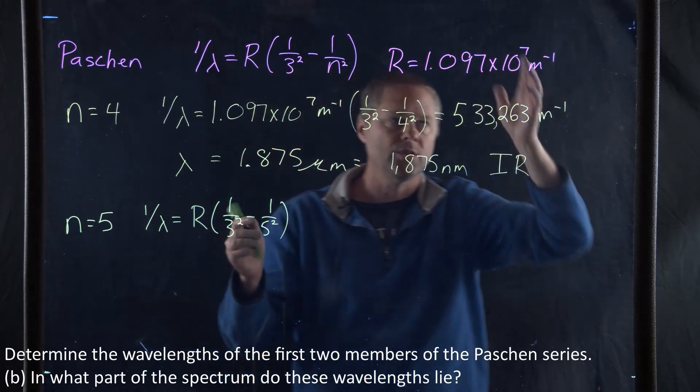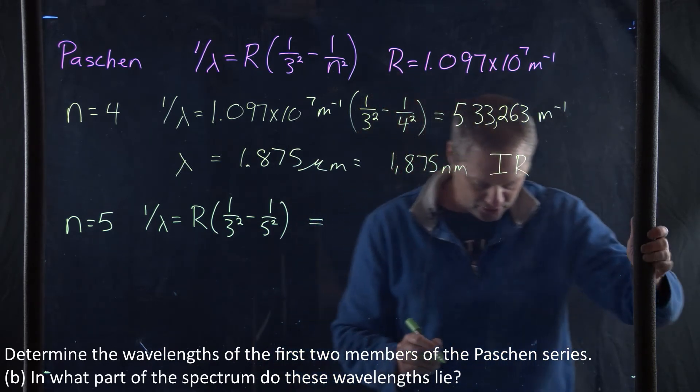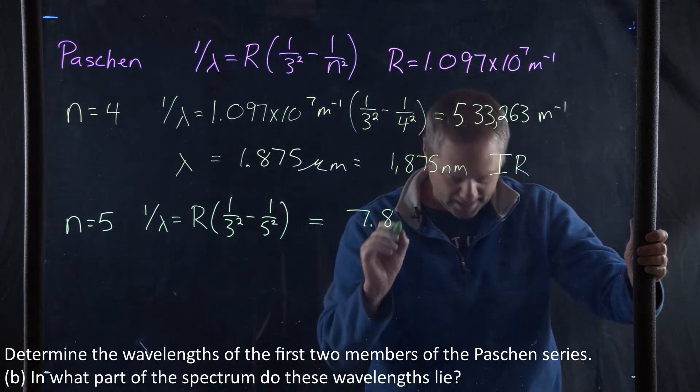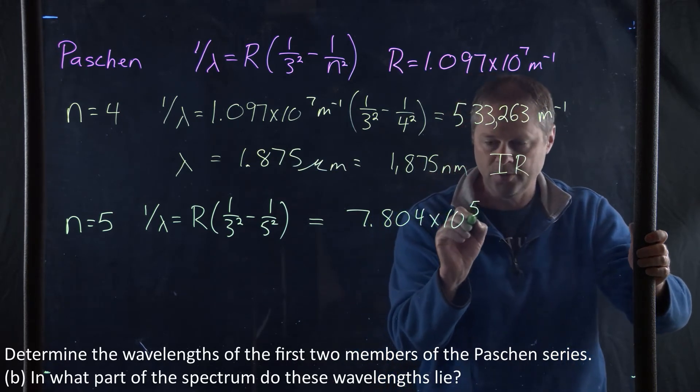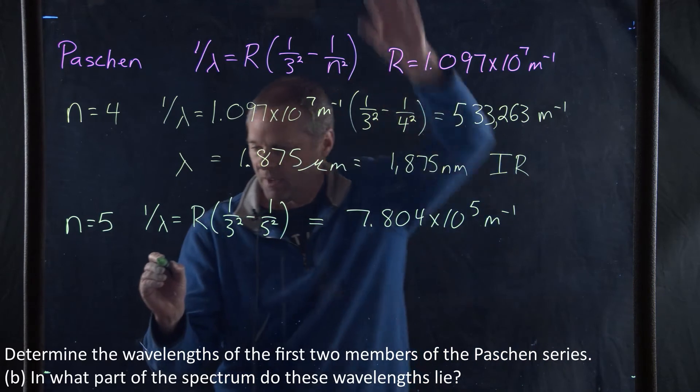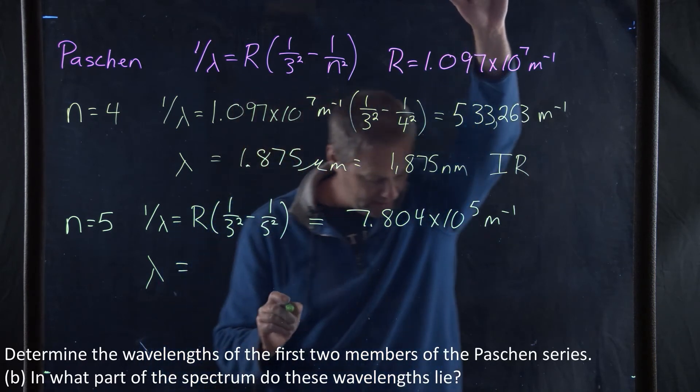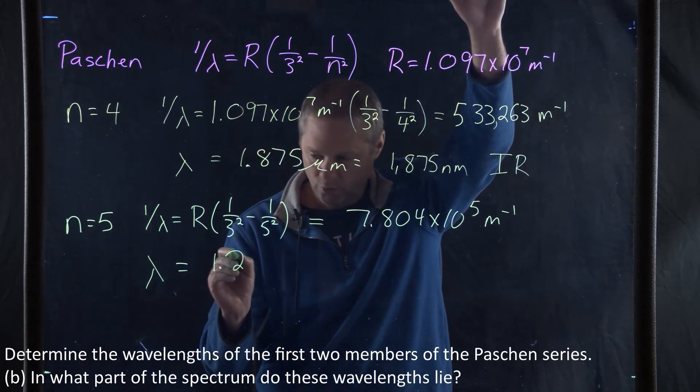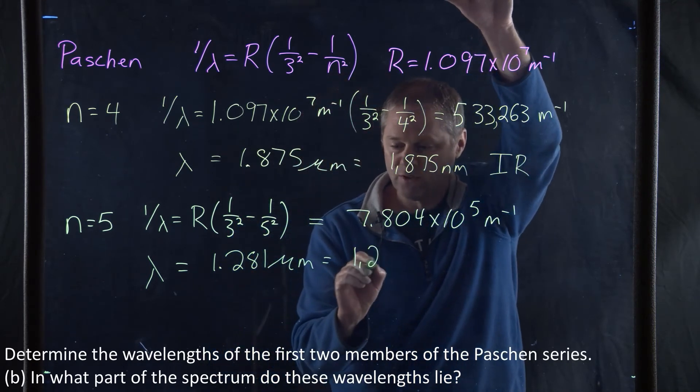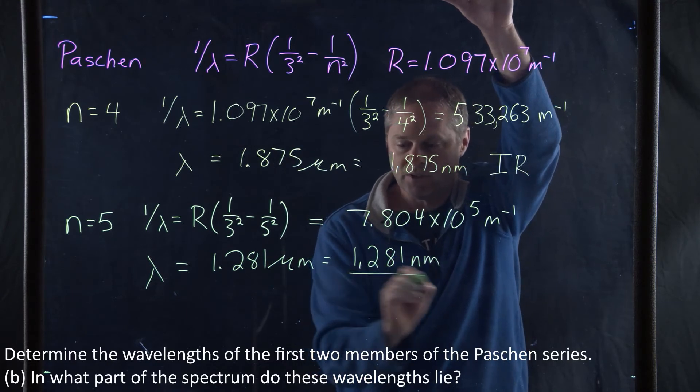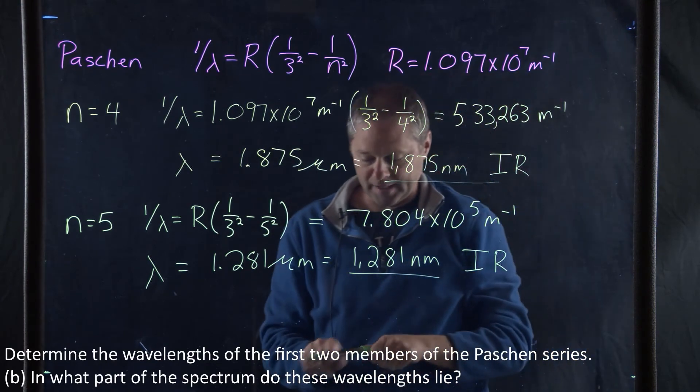Our R is 1.097 times 10 to the 7th inverse meters. We do the calculation and get 7.804 times 10 to the 5th inverse meter. We take the inverse and get 1.281 microns or 1,281 nanometers. And once again, this is in the infrared portion of the electromagnetic spectrum.